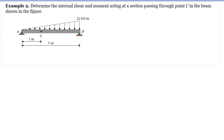At point A, we have two reactions: AY and AX. For point B, since this is a roller, we have only one reaction, and that is BY.